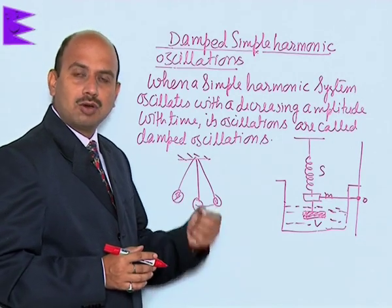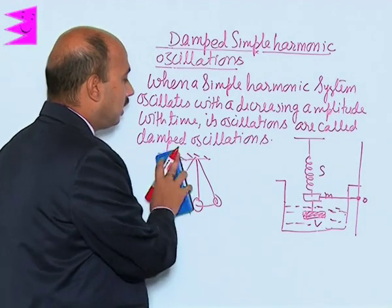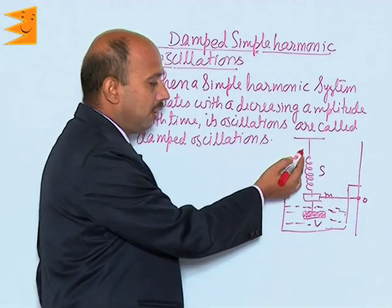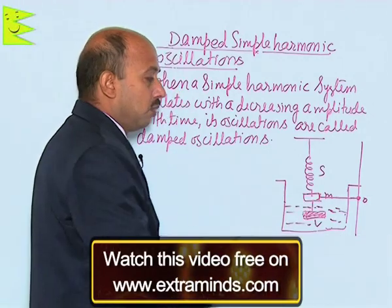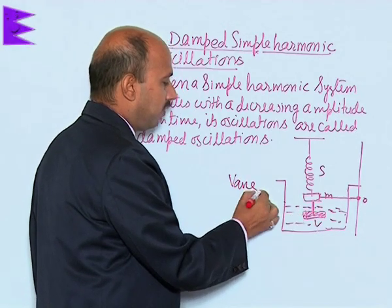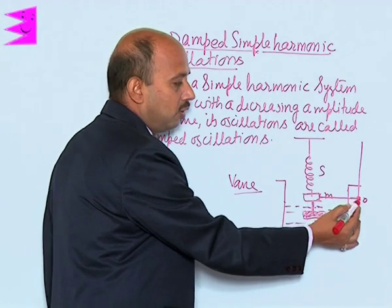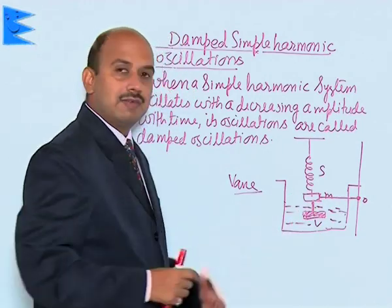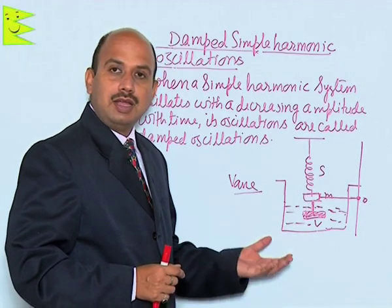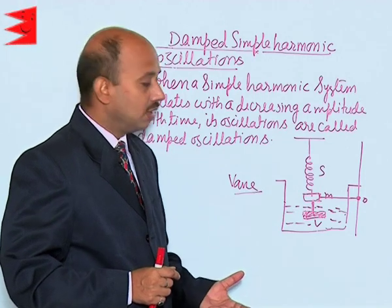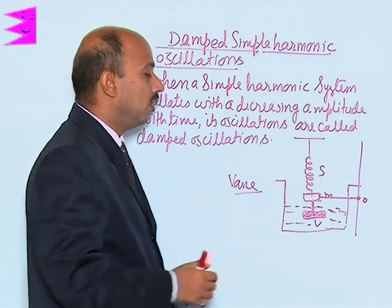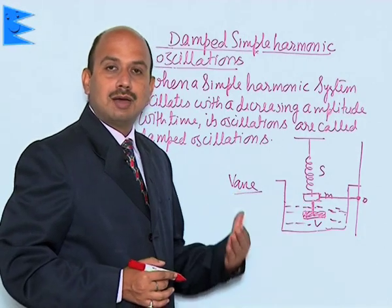Similarly, if you take a spring in air and oscillate it, after some time it comes to rest. As another example, consider a spring with a mass attached and a vane (V) which is massless. When the mass is oscillated in air it keeps oscillating for a long time, but when the vane is submerged in liquid and the mass is pulled downward and released, the vane displaces the liquid creating an upthrust, opposing the motion. Due to this upthrust and viscous force, the system's amplitude keeps on decreasing and the system comes to rest.